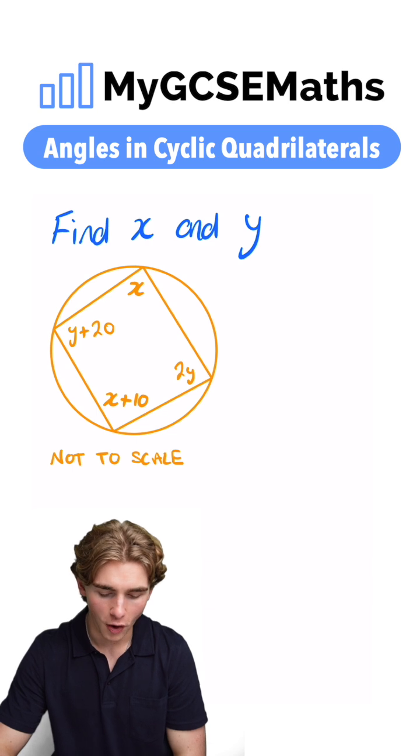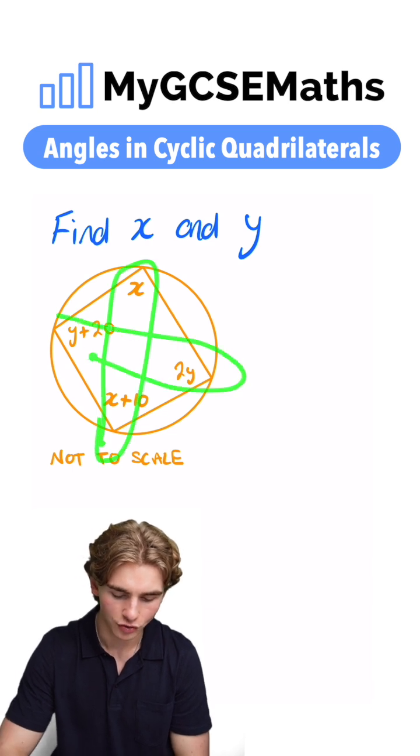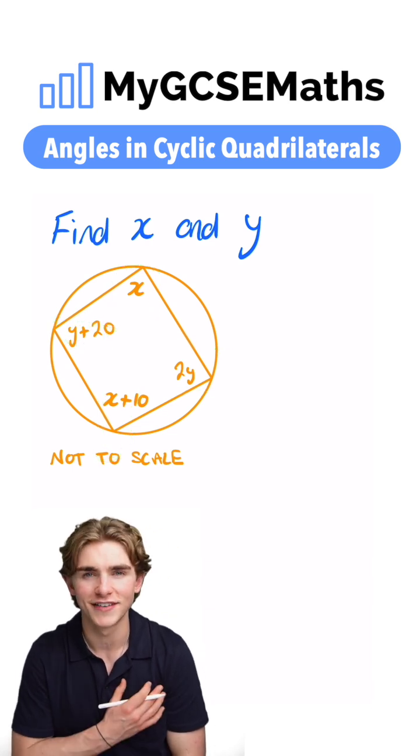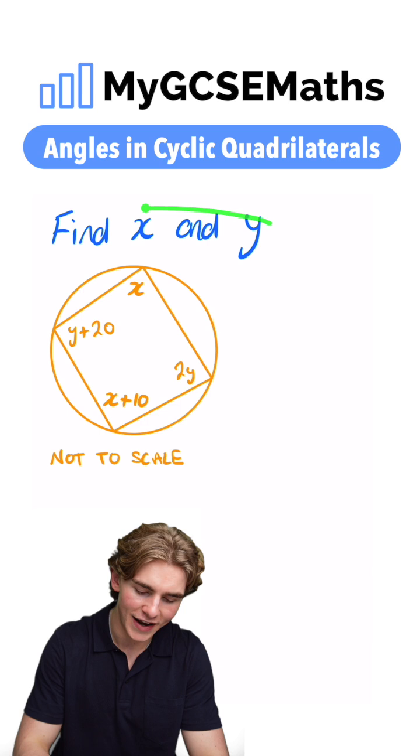What does that mean? It means that the opposite angles in that quadrilateral have to add to make 180 degrees. So how can we find x and y?